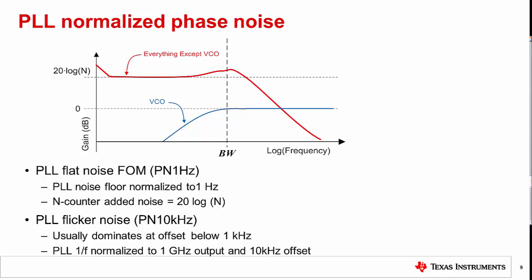To simplify characterization, one can lump all the PLL in-band noise contributions together, excluding the VCO. The normalized flat noise figure of merit and 1 over F noise provide a convenient way to predict noise within the loop bandwidth of a PLL. These normalized values account for the charge pump, input path, N divider, and R divider. The figure of merit and 1 over F noise can be used to predict phase noise and compare two different PLLs under different conditions. Note the figure of merit assumes the VCO noise does not dominate, and some adjustments may be needed for fractional parts, since this does not account for the phase noise advantage of having a lower fractional N counter.